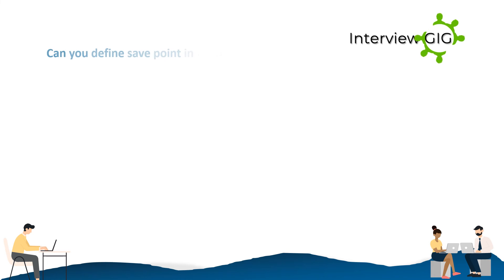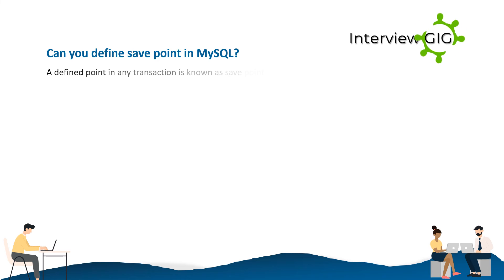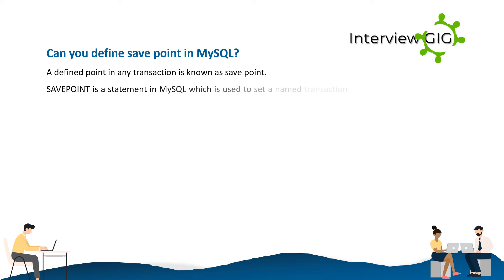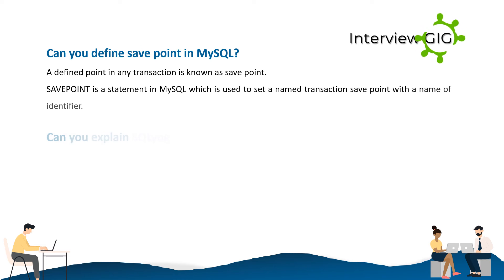What are the objects that can be created using the CREATE statement? The following objects are created using the CREATE statement: DATABASE, EVENT, FUNCTION, INDEX, PROCEDURE, TABLE, TRIGGER, USER, VIEW. Can you define savepoint in MySQL? A defined point in any transaction is known as a savepoint. A savepoint is a statement in MySQL which is used to set a named transaction savepoint with a name identifier.